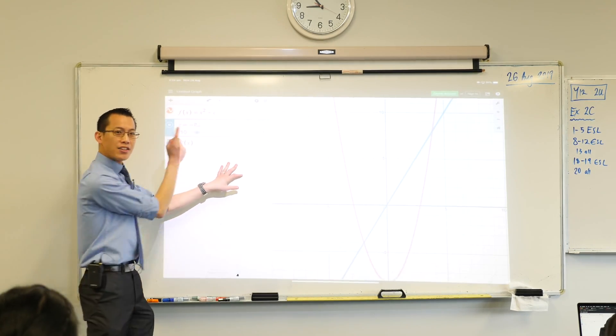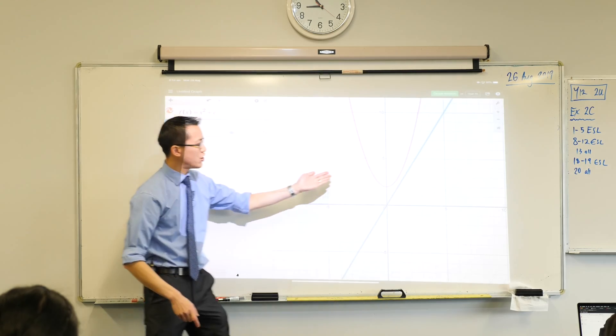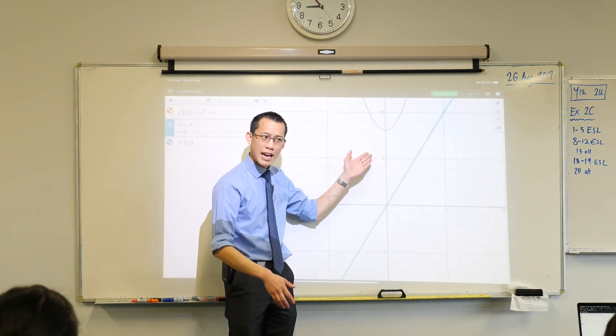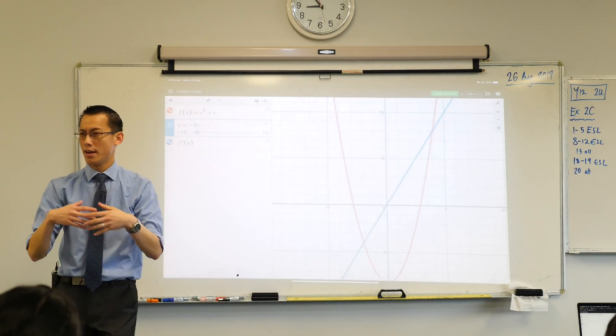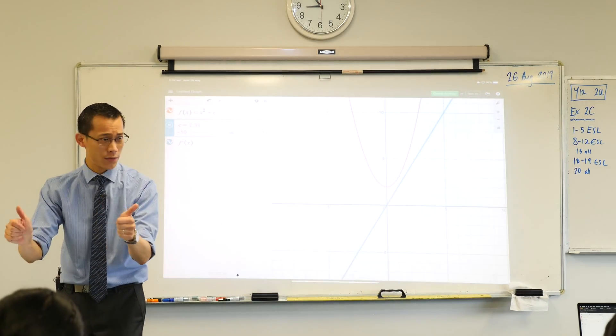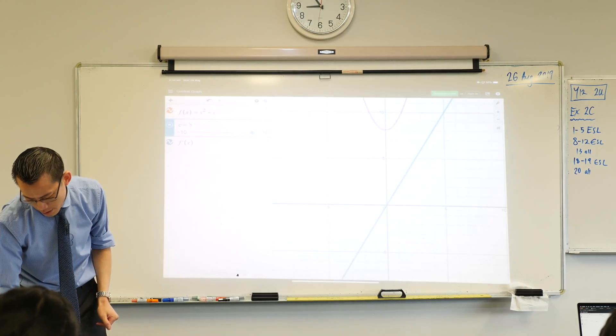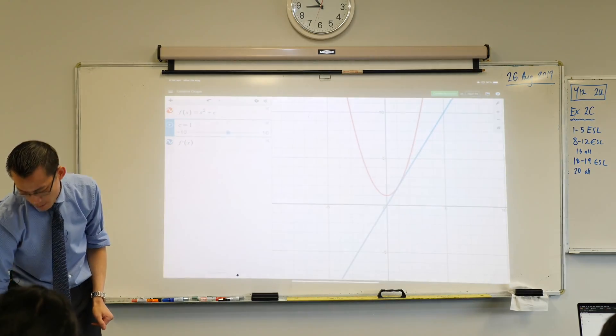Because our derivative just depends on how steep or how shallow it is, and when you change the position, the steepness or shallowness stays the same. Do you agree with that? Everything's fine. Hit pause so that's not so distracting, let's just leave that somewhere in the middle.